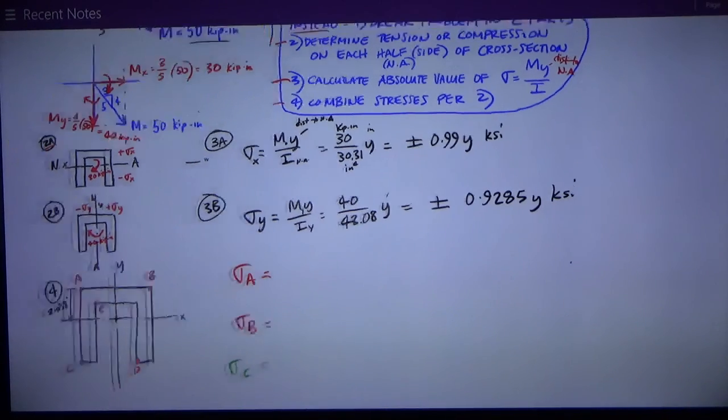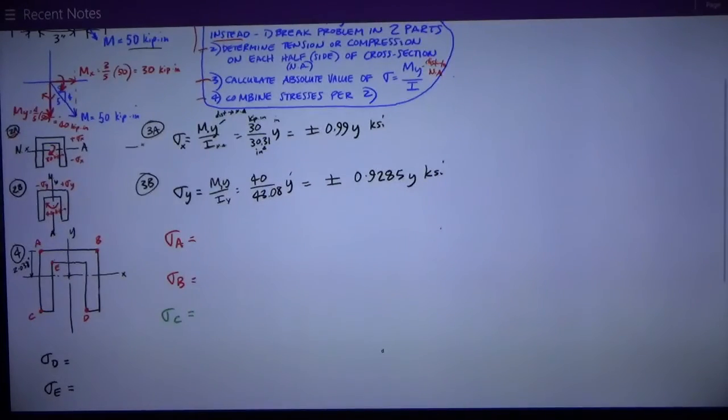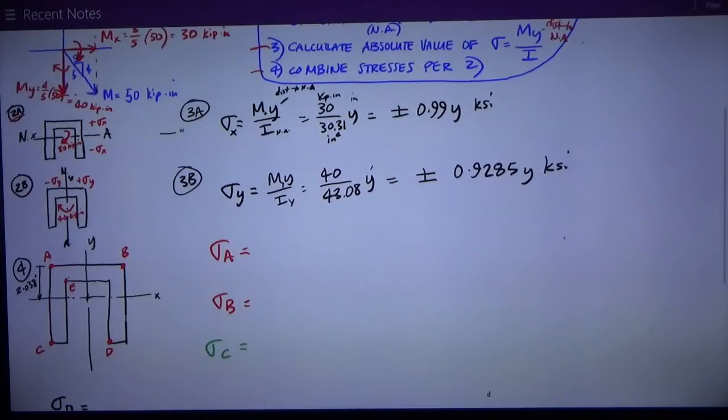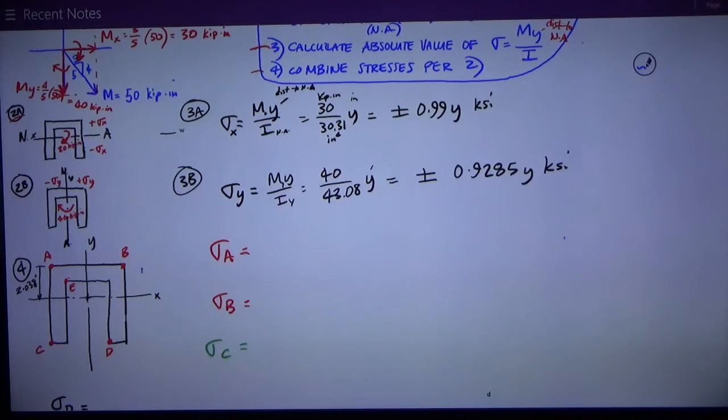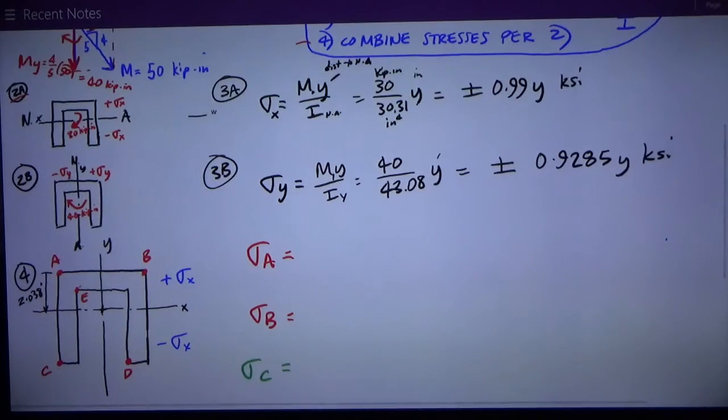Now let's look at the specific case where we want to figure out the stresses at five different points. In case A, first let me transfer my stress information, the sign of it, down to this drawing number four. I have positive sigma x on the top, negative sigma x below the neutral axis. On the left side of the neutral axis, I have negative sigma y. On the right side, I have positive sigma y. So I can just look real quickly at the quadrants and I can see at point A, I have positive sigma x and negative sigma y.